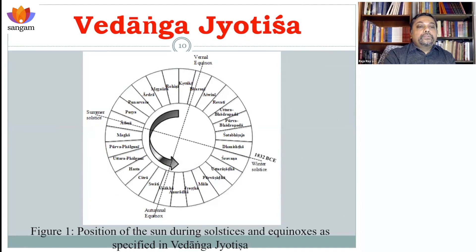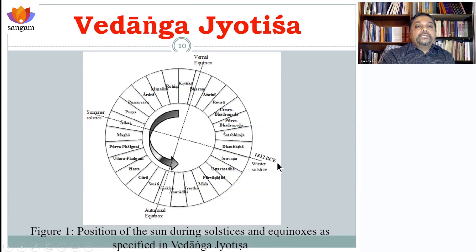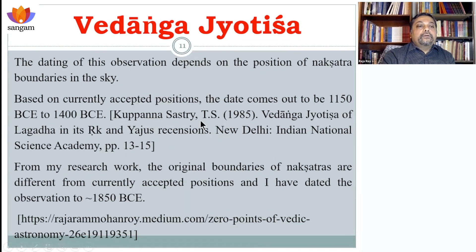The graph shows all 27 nakshatras, with the current order starting from Ashwini going through Bharani, Krittika, Rohini, Mrigashira, Ardra, and so on. If the beginning of Shravishtha is at the winter solstice, opposite that is summer solstice, and 90 degrees from that gives the vernal and autumnal equinoxes. My proposed date is 1832 BCE, though the currently accepted dating range is approximately 1180 to 1400 BCE.